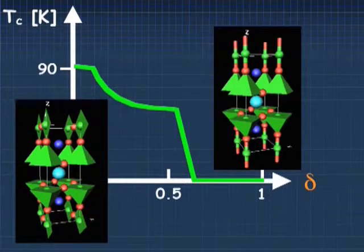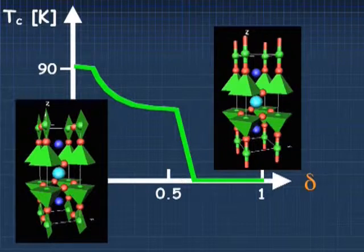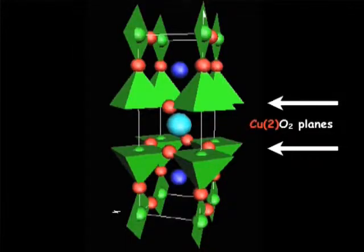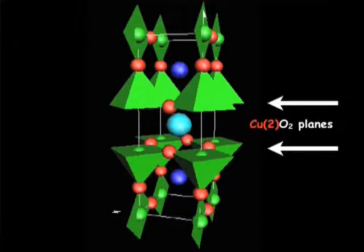So from this, the very straightforward interpretation is that for the superconductivity, the whole doping level or the copper valence in CO2 planes is most crucially important. So even though we have different types of layers in high-TC superconductors,